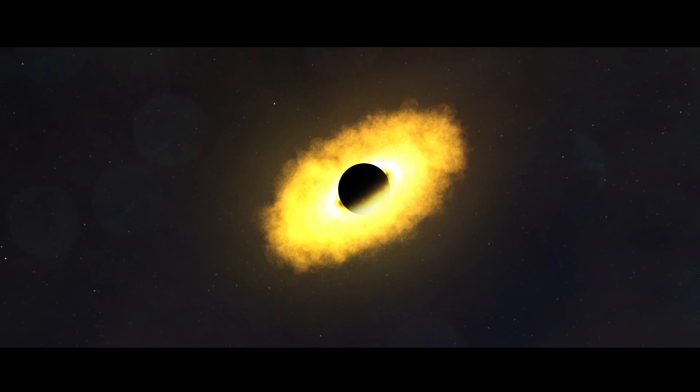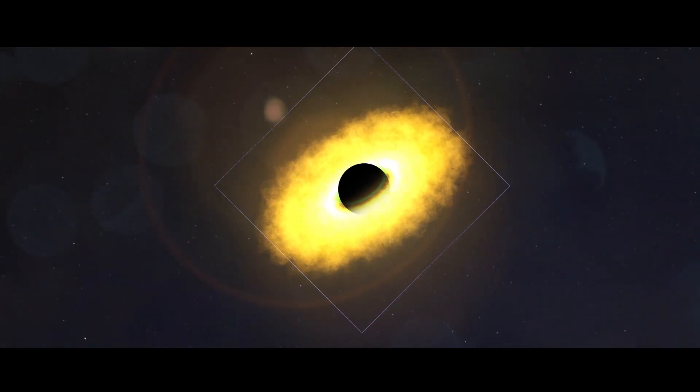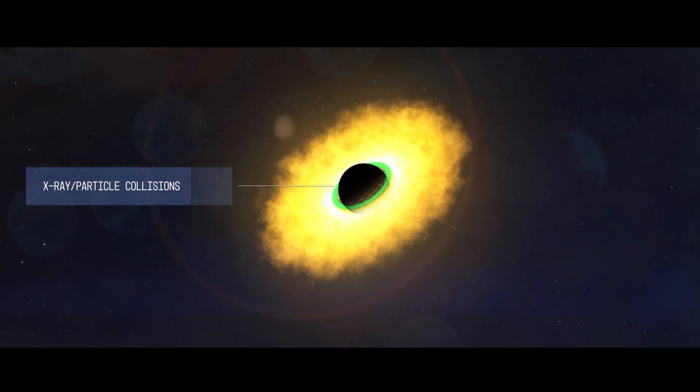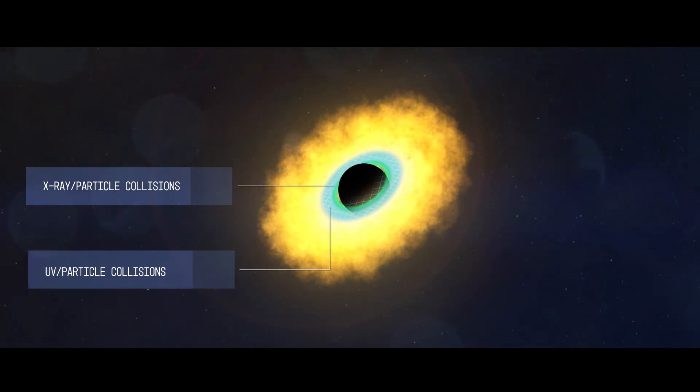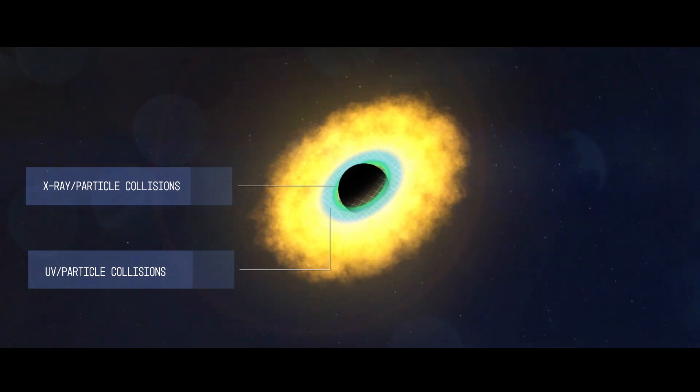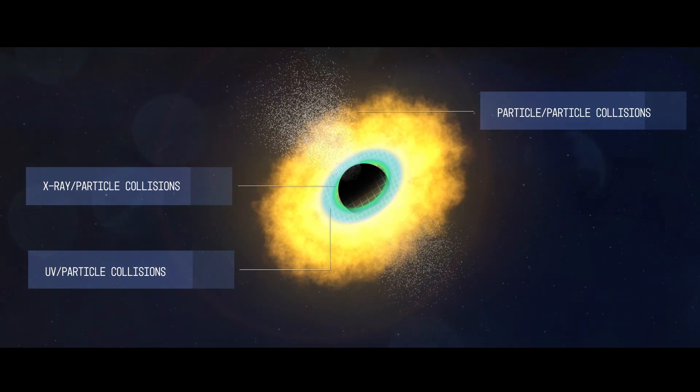Astronomers think the neutrino may have come from one of three regions: in the disk close to the black hole, where particles colliding with X-rays could produce neutrinos; further out in the disk, where particles could interact with UV light; or in broad outflows, where particles could collide with each other.